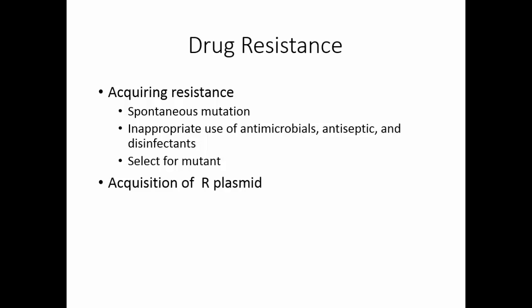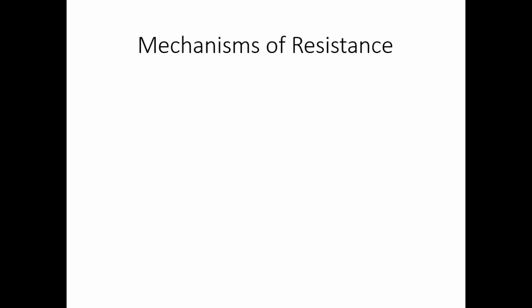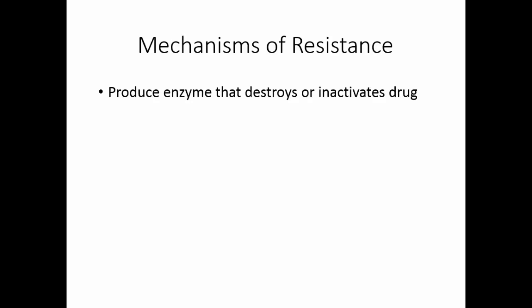Organisms can also acquire an R-plasmid. The R-plasmid is acquired through conjugation, and R-plasmids may carry multiple genes. In other words, one R-plasmid may carry genes for multiple drug resistance.